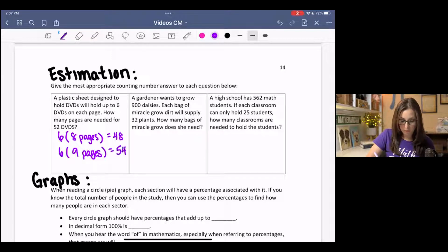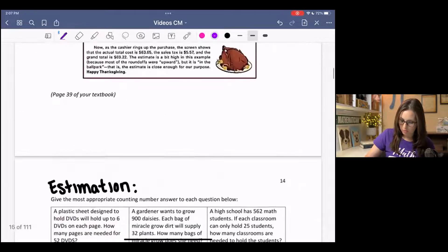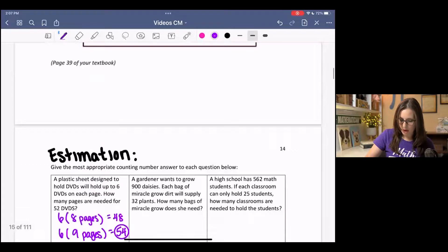then that's 54 DVDs. And that would give me two open spaces, which would be the better option. You want to go over in this case. So you would need 9 pages.